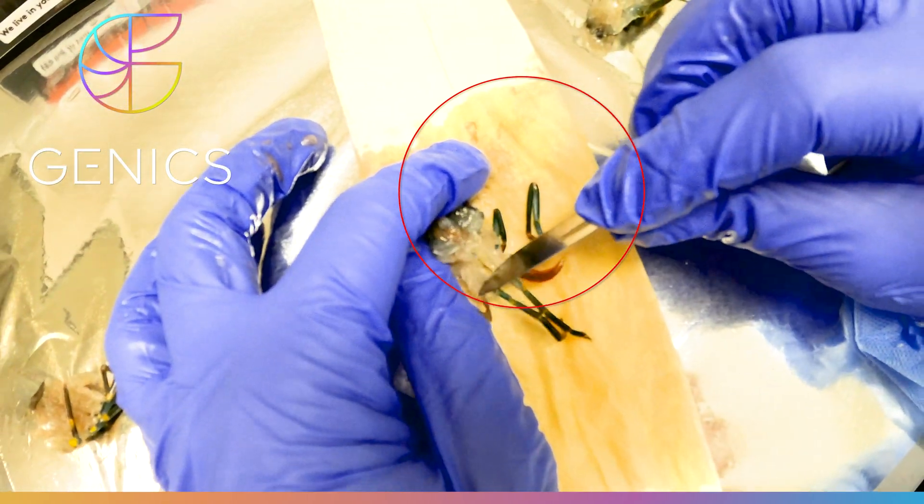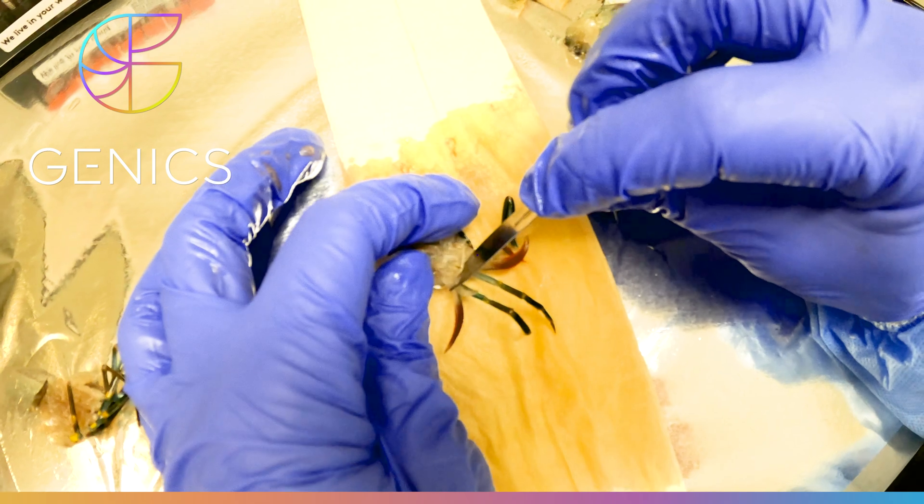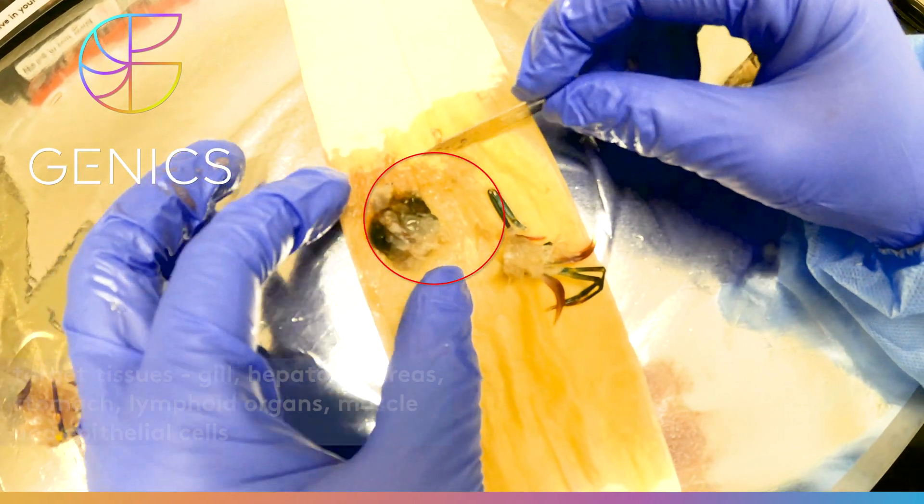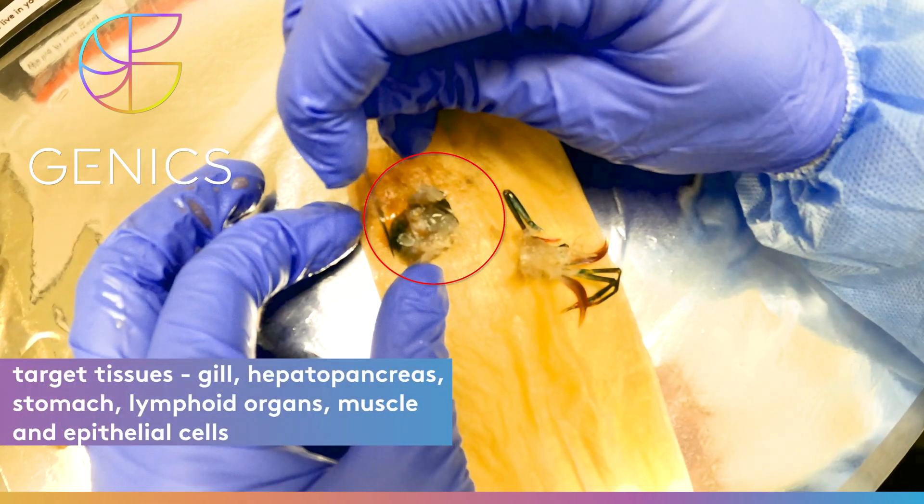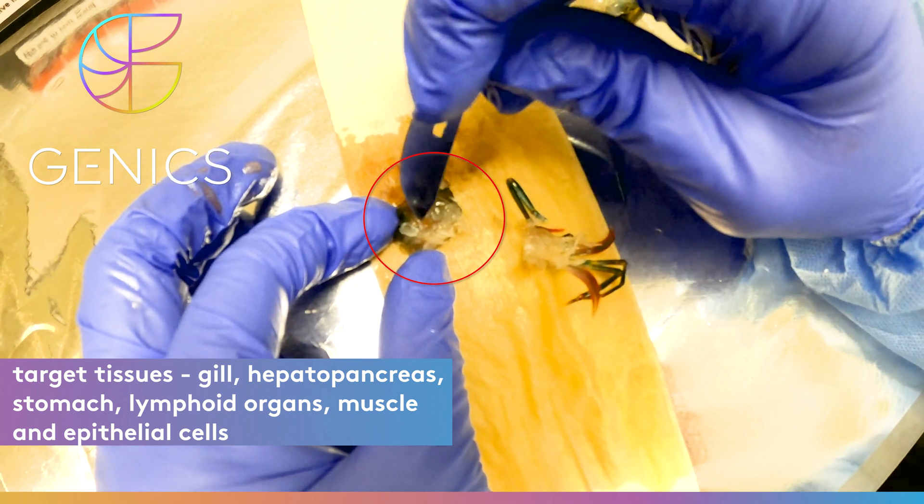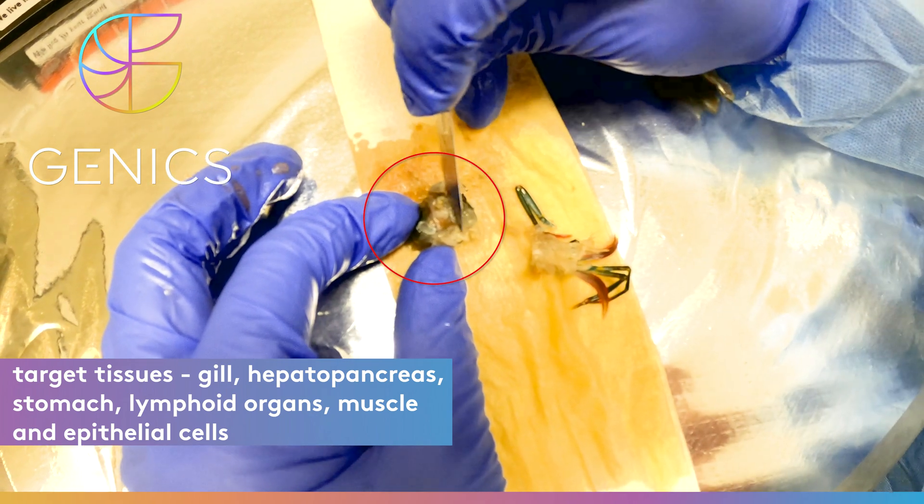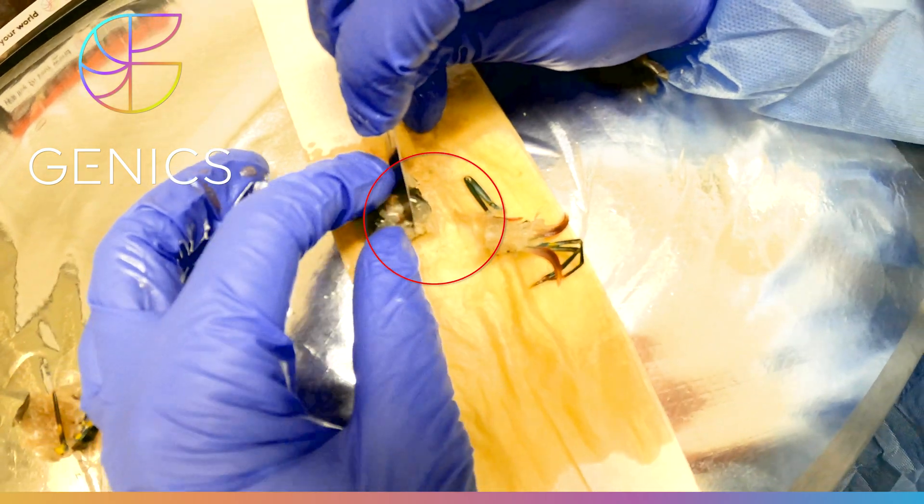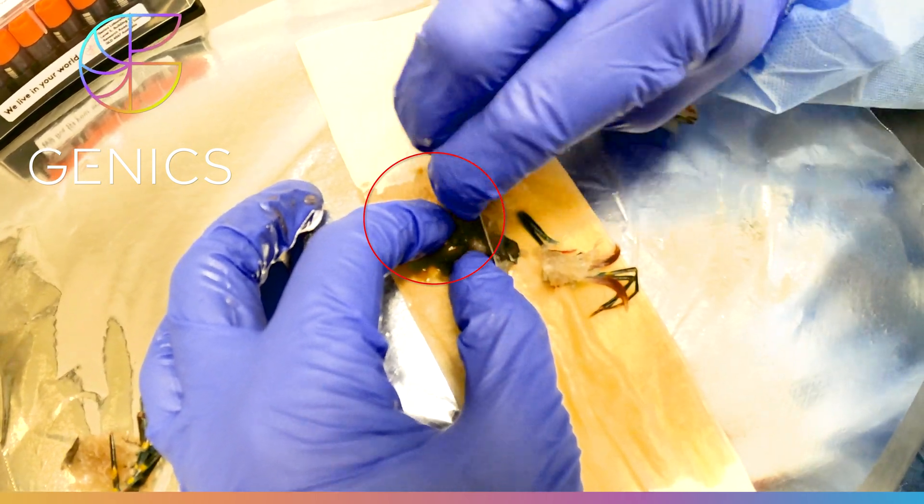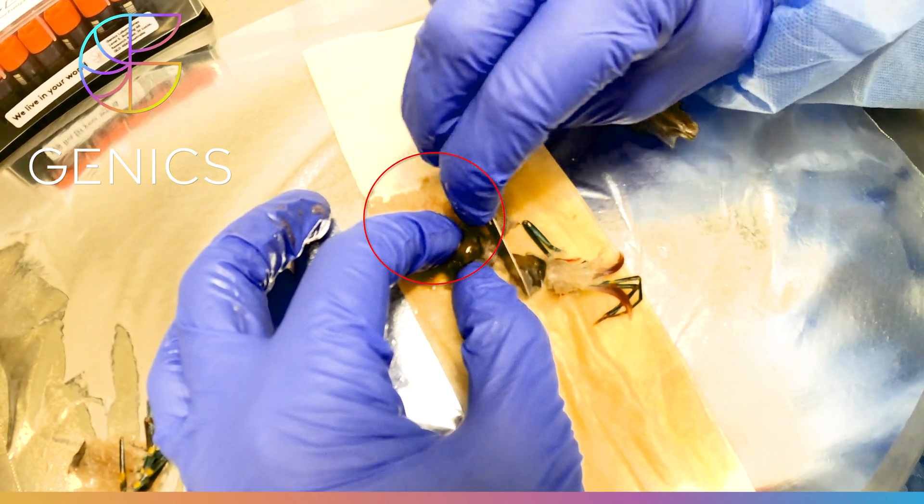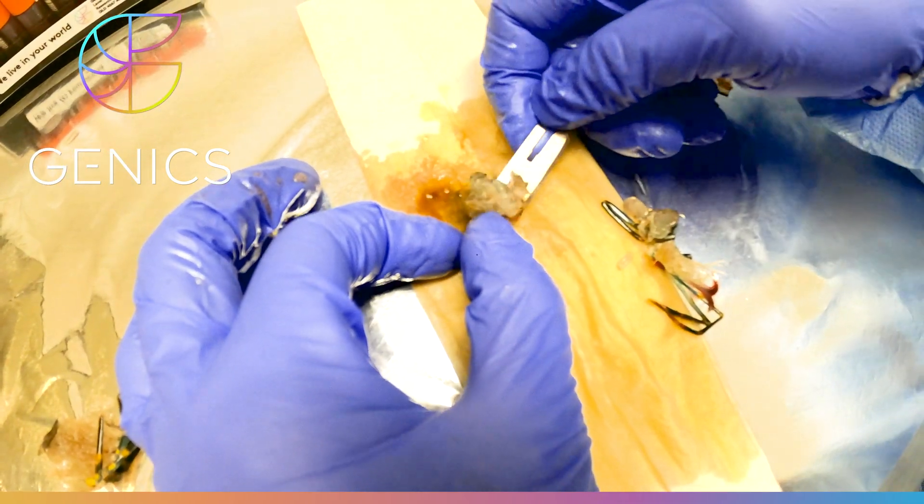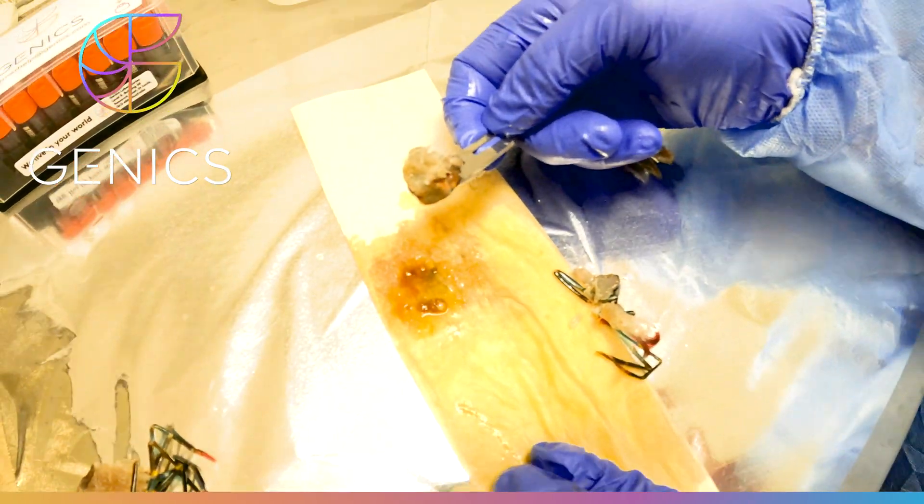So now what I will do is trim my piece of tissue so that we can put it into our tube. So I'm just going to cut the periopods off. And I know that we've got gill, epithelium, muscle, hepatopancreas, stomach, and lymphoid organs. And I'll just trim it up by cutting off about one third of the right hand side here. Remove that. And then this is the piece of tissue that we'll put into our tube for testing.